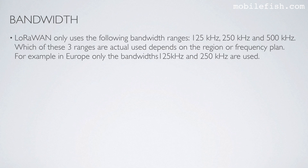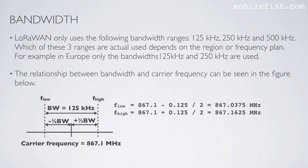LoRaWAN only uses the following bandwidth ranges: 125 KHz, 250 KHz, and 500 KHz. Which of these ranges are actually used depends on the region or frequency plan — for example, in Europe only 125 KHz and 250 KHz are used. The relationship between bandwidth and carrier frequency can be seen in the figure. If the carrier frequency is 867.1 MHz and the bandwidth is 125 KHz, then the lowest and highest frequencies can be calculated: the lowest frequency equals the carrier frequency minus the bandwidth divided by 2.